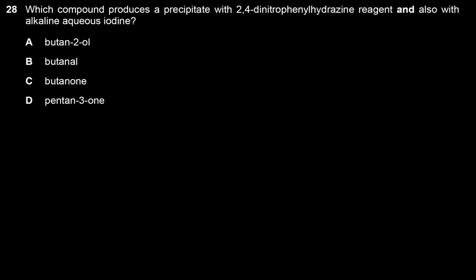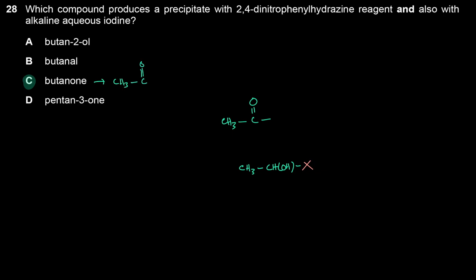Which compound produces a precipitate with 2,4-DNPH and also with alkaline aqueous iodine? 2,4-DNPH requires a carbonyl compound; alkaline aqueous iodine (iodoform test) requires a CH₃CO group. Butanone has the structure CH₃-CO-CH₂CH₃, which has both the carbonyl group for 2,4-DNPH and the CH₃CO group for the iodoform test. The answer is C.